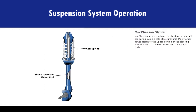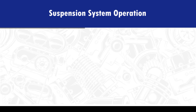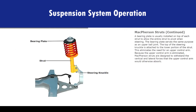McPherson struts combine the shock absorber and coil spring into a single structural unit. McPherson struts attach to the upper portion of the steering knuckles and to the strut towers on the vehicle body. A bearing plate is usually installed on top of each strut to allow the entire strut to pivot when steering, serving the same purpose as an upper ball joint. The top of the steering knuckle is attached to the lower portion of the strut, eliminating the need for an upper control arm. McPherson struts are designed to withstand the vertical and lateral forces that the upper control arm would otherwise absorb.